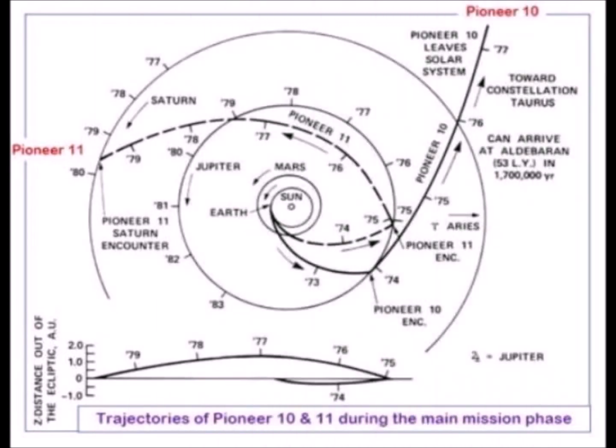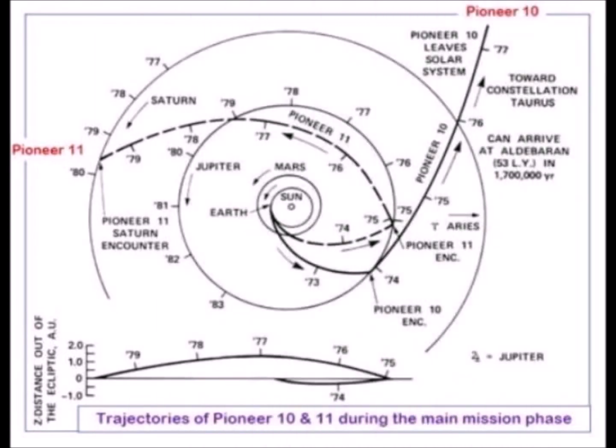The path of Pioneer 10 is inclined by 1.92 degrees to the ecliptic. While flying over the planet Jupiter, Pioneer 10 was accelerated and deflected.